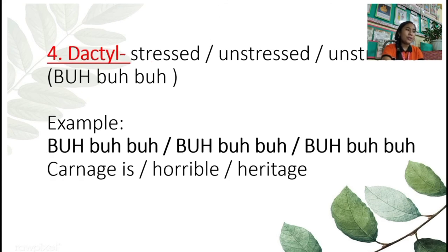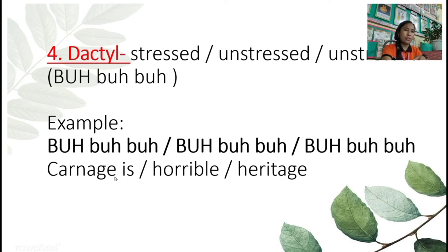The fourth one is dactyl: stressed, unstressed, unstressed. Example: CARnage is HORrible. HERitage. Carnage is horrible. Heritage.